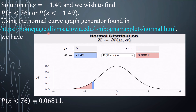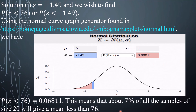Using the link again, we have x equal to negative 1.49 as our z-score, and then changing this to less than x. So the result is 0.06811. That is the probability that the sample mean is less than 76. This means that 7% of all the samples of size 20 will give a mean less than 76.